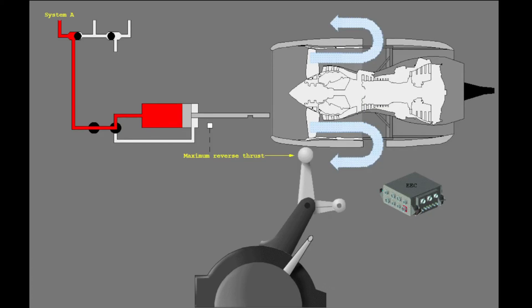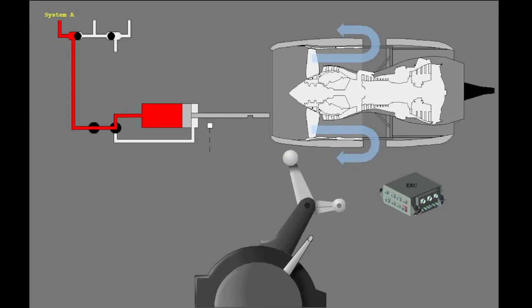The EEC now sets maximum reverse thrust. When reverse thrust is no longer necessary, lower the reverse thrust levers to detent number one. In detent number one, the EEC now sets a minimum idle.